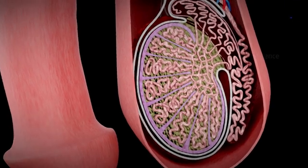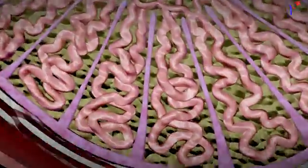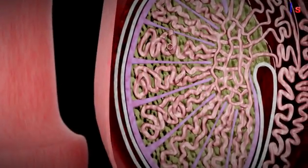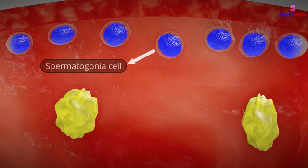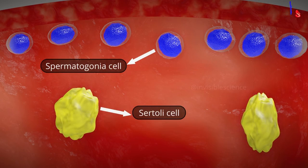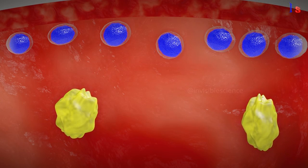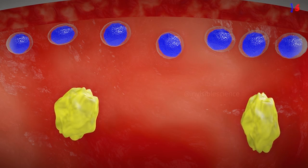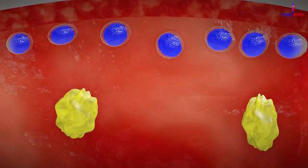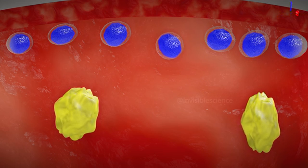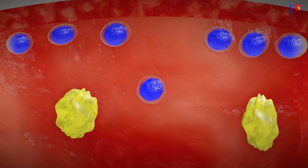If we look inside this tube, we can see that it contains some sperm. When we cut it, we primarily find two types of cells: spermatogonia and Sertoli cells. Spermatogonia are stem cells responsible for sperm production. These cells undergo division to produce primary spermatocytes.